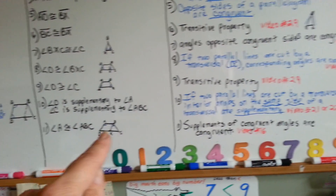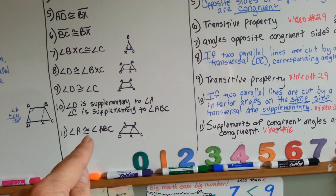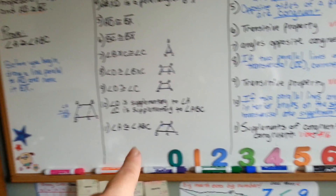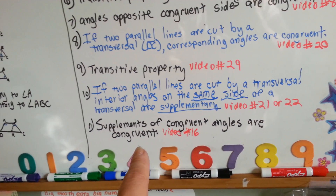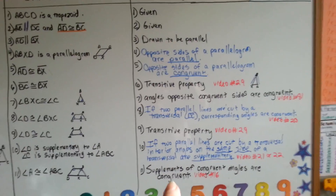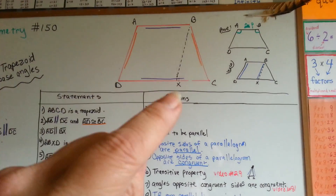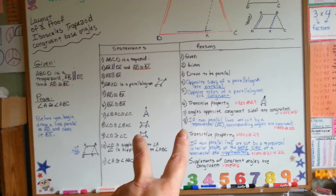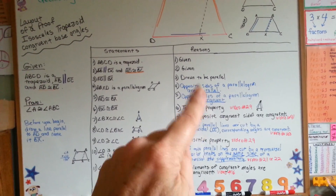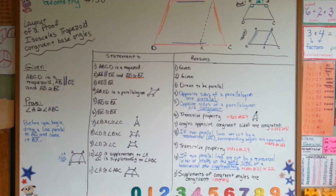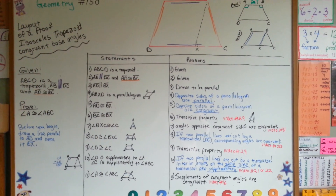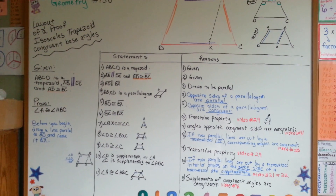Do you remember about transversals? Our final step is that angle A is congruent to angle ABC — that's what we were trying to prove all along. Our reasoning is that supplements of congruent angles are congruent — look that up in video number 16. Hopefully I've clarified some things. This is the layout of a proof of an isosceles trapezoid with congruent base angles. Our next video is going to be isosceles trapezoid congruent diagonals — the layout of a proof for that. See you next time.